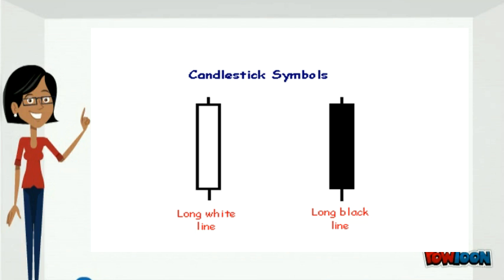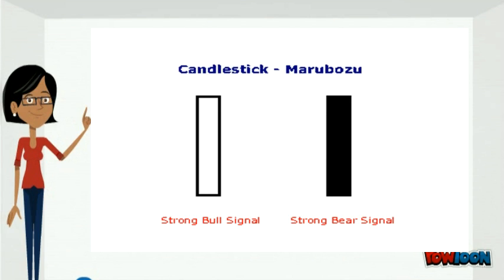Marubozu candlesticks: Marubozu are even stronger bull or bear signals than long lines, as they show that buyers or sellers have remained in control from the open to the close. There are no intraday retracements.